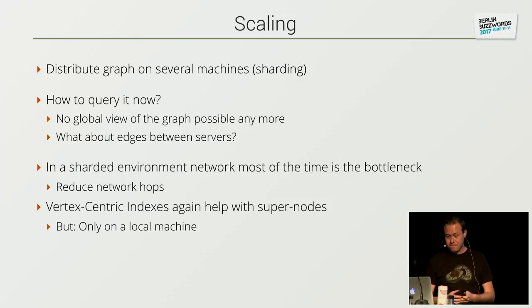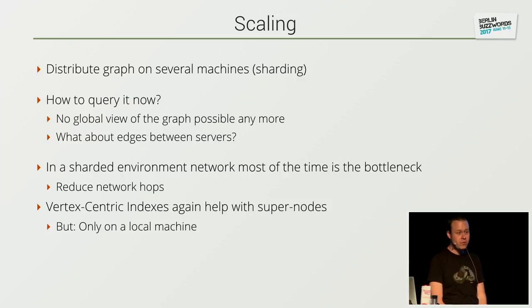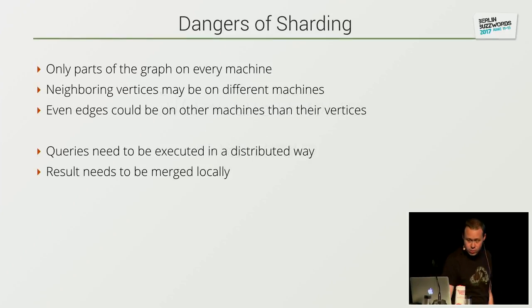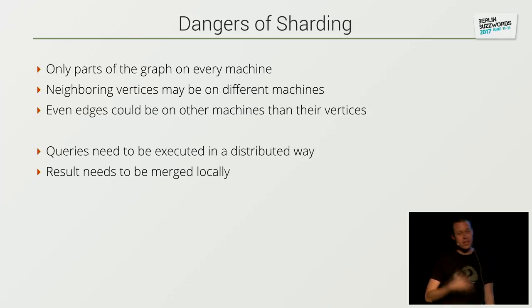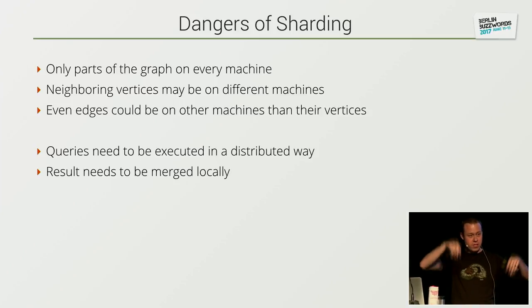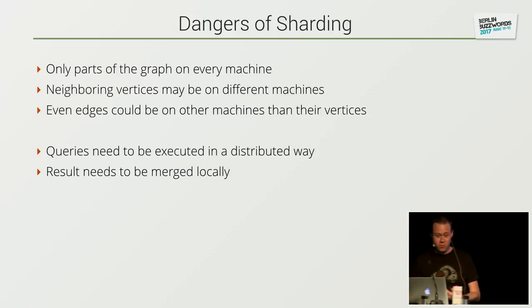Even in a sharded environment I can use vertex-centric indices — they still help with super nodes, but they do not fix the problem of hopping between machines; they only help on a local machine. The dangers of distribution are: only parts of the graph are on every machine, neighboring vertices might be on different machines, and with some graph databases even the edge between vertex A and B can be on a third machine, adding an additional network hop and making it even more expensive.